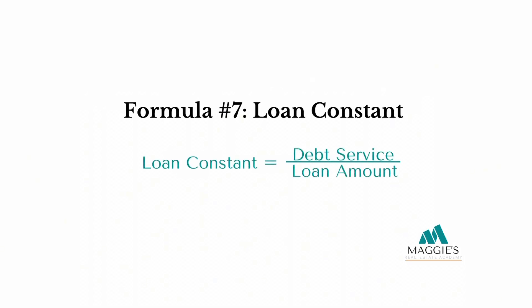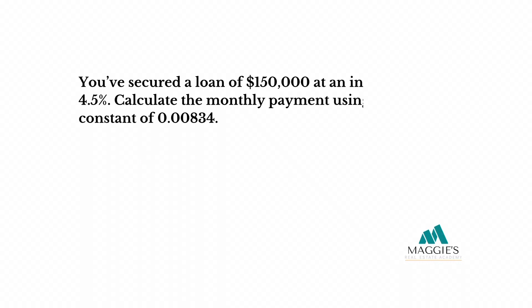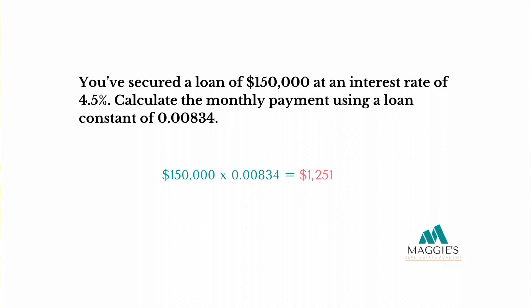Formula number seven: loan constant. Debt service or monthly payment divided by loan amount equals your loan constant. Say you've secured a loan of $150,000 at an interest rate of 4.5%. Calculate the monthly payment using a loan constant of 0.00834. In this scenario, you just multiply — if you got $1,251, you are a smart cookie.